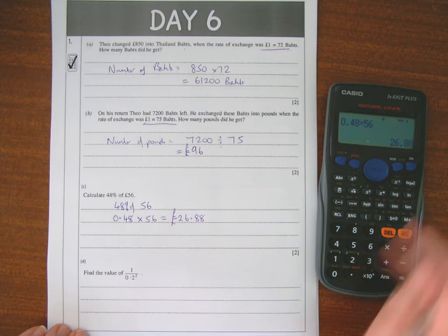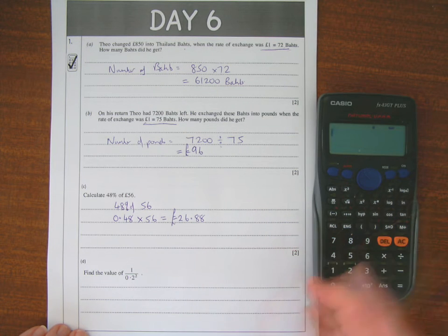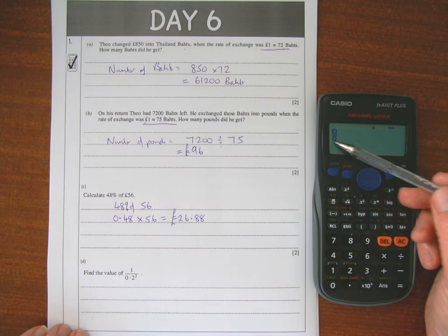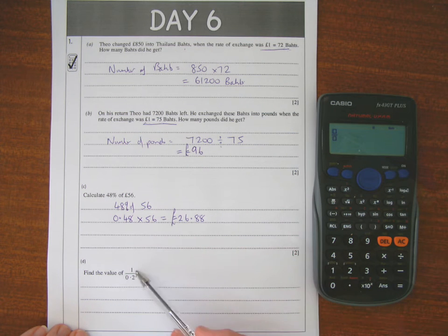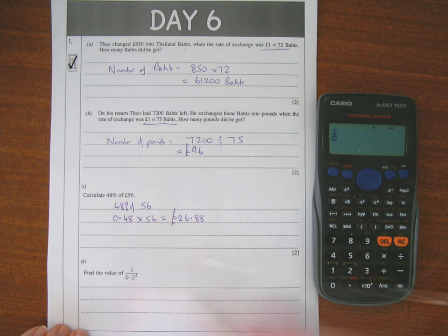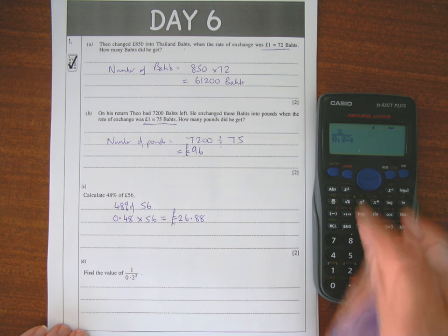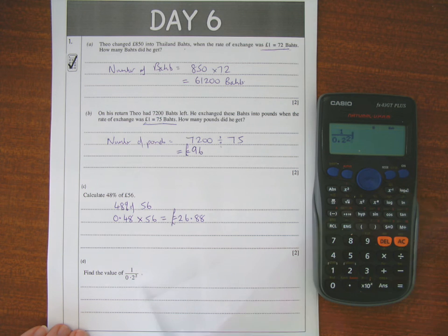And here, I write this as I see it. So I use the fraction, the box over the box. In the top box, I put in the top line, which is 1. In the bottom box, I'm typing 0.2 squared. So that's exactly, so I've typed in exactly what I see. Press equals. And then an answer of 25.